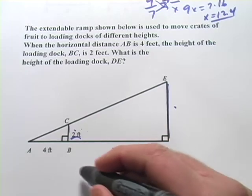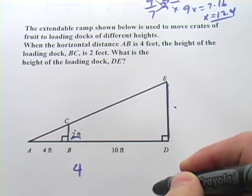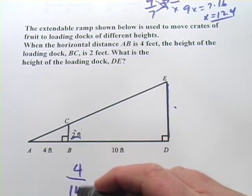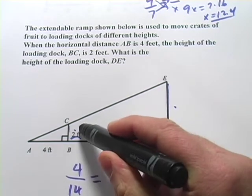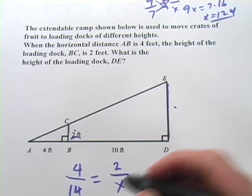So let's set up a ratio of little triangle to big triangle and use the bottom lengths here. So 4 is to 14 as and then we want to do little triangle over big triangle. So 2 is to the side we're looking for.